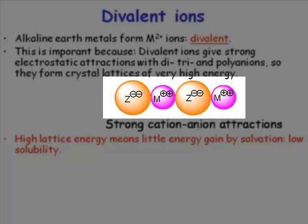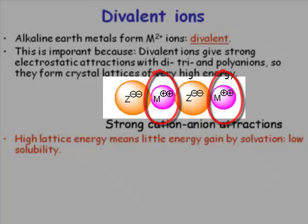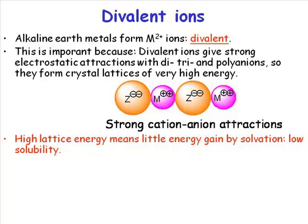We're interested in the chemistry of divalent ions — metal two-plus species. And that's actually incredibly significant; that's where the alkaline earth part of this comes in. Because we are dealing with metal two-plus species, we've removed two electrons, we have a two-plus positive charge. These are small, very strongly charged species.